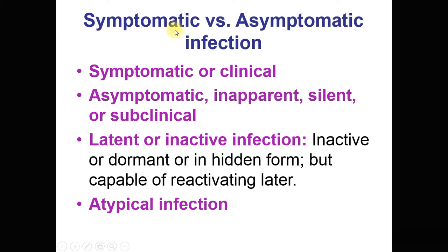Coming to the types of infection — symptomatic versus asymptomatic. This classification is based on symptoms. Symptomatic infection is also called clinical infection, where symptoms are observed. In asymptomatic infection the symptoms are absent and the patient appears normal. These are also called inapparent, silent, or subclinical infections.